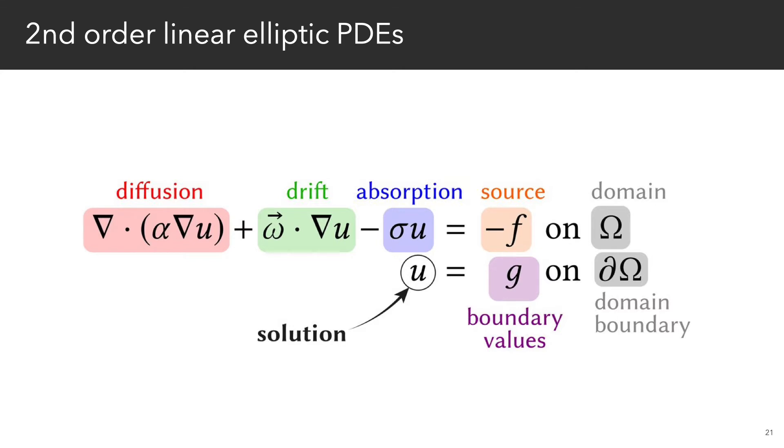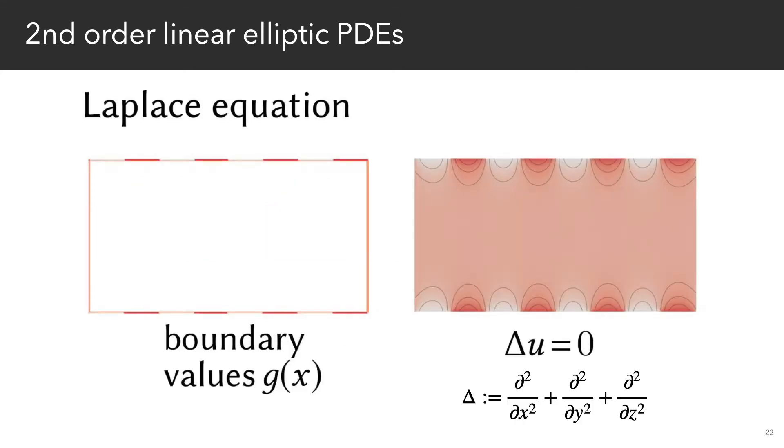So let's unpack this equation term by term. First, a Laplace equation describes the steady state temperature inside a domain if heat is fixed to some given function G on the boundary.